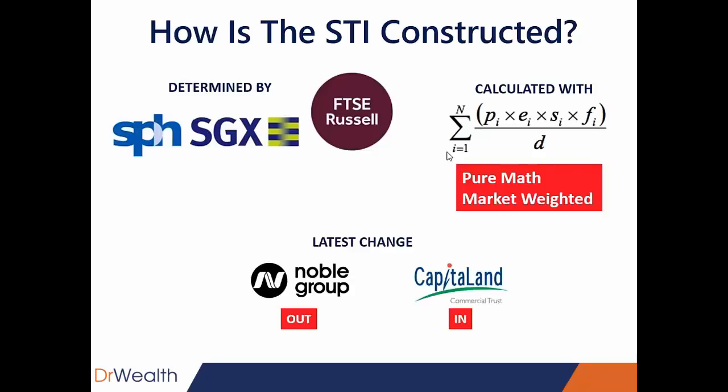It's not always the same 30 stocks — it will change. The latest change was done last quarter in March. Noble Group, because of all the alleged fraud regarding their investments in Australia and their accounting practices, saw their share price drop a lot, which means their market weight also dropped, because market weight is dependent on share price. So Noble Group fell out of the index and Capital Land Commercial Trust was added in. There is a reserve list that SPH, SGX, and FTSE curate, and they tap on this reserve list whenever required. They meet every three months to reconstruct the STI, so there may be changes — the latest one being Noble Group replaced by Capital Land Commercial Trust.